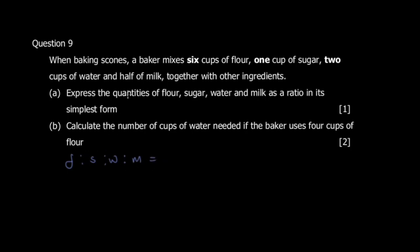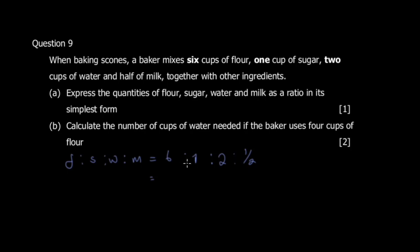Setting up the ratio: flour : sugar : water : milk = 6 : 1 : 2 : ½. Simplest form means no fractions, so we multiply every term by 2 to eliminate the half. This gives 12 : 2 : 4 : 1.